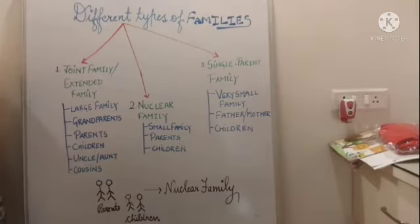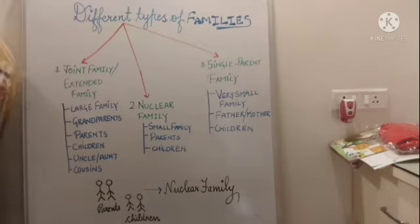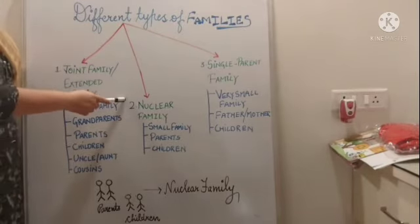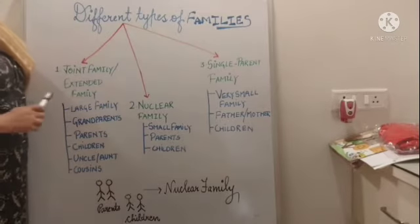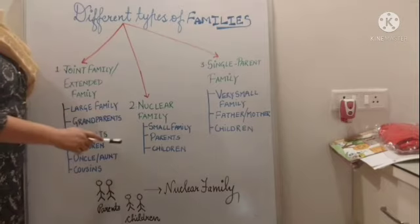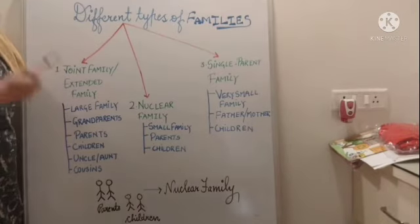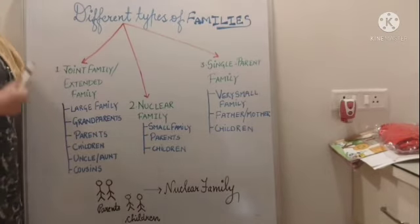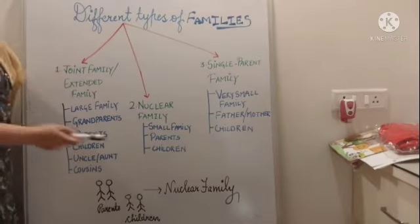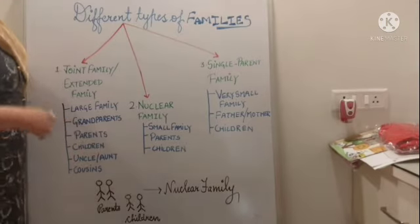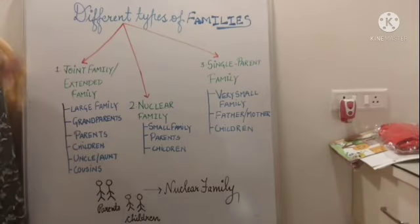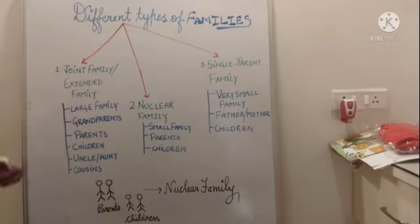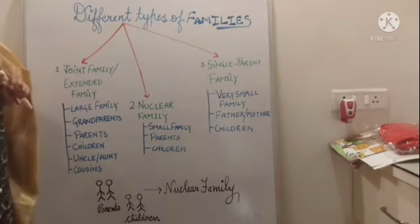So children, talking about our next type of family — this is a nuclear family, N-U-C-L-E-A-R, nuclear family. This is also known as a small family. Why is it known as a small family? Because parents live with their children only. When parents live with their children only, then that family is known as the nuclear family.